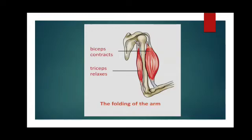One muscle helps to pull in one direction and the other pulls in the opposite direction. The pair of muscles work together by contracting and relaxing to move a bone. Let us take the example of the bones found in the upper arm — they are biceps and triceps.